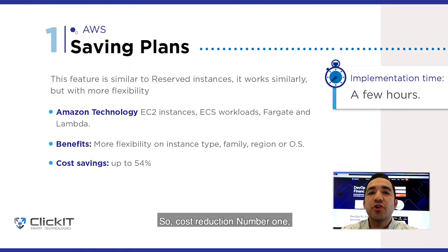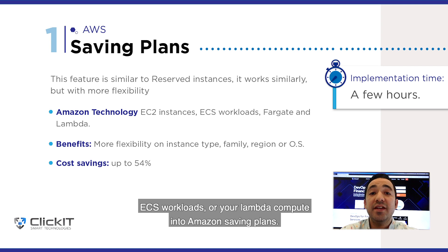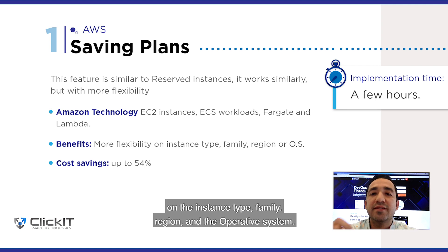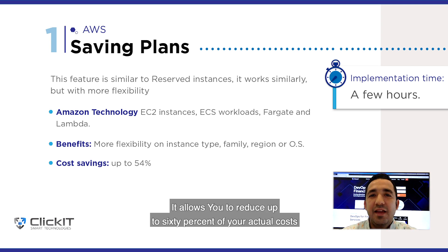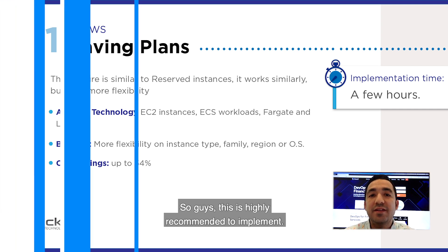Cost reduction number 1: Use Amazon Saving Plans. It is a feature from AWS. You can move your EC2 instances, ECS workloads, or your Lambda compute into Amazon Saving Plans. This feature is similar to Reserved Instances, but it has more flexibility on the instance type, family, region, and operating system. It allows you to reduce up to 60% of your actual costs in return for a long-term commitment of 1 to 3 years. This is highly recommended to implement.